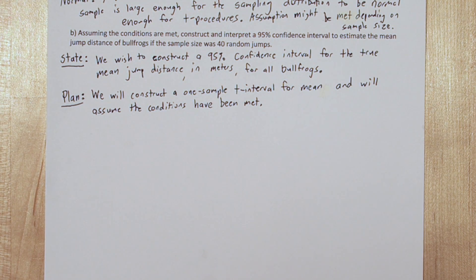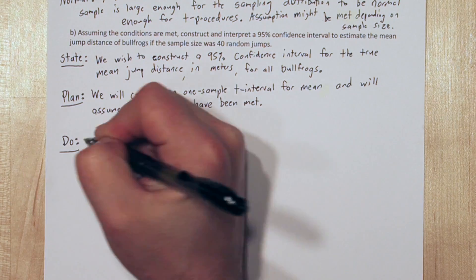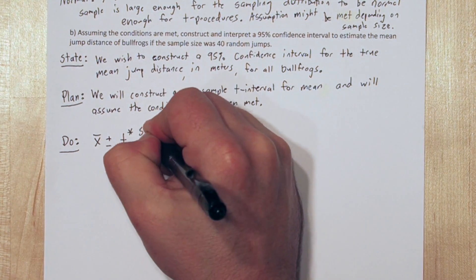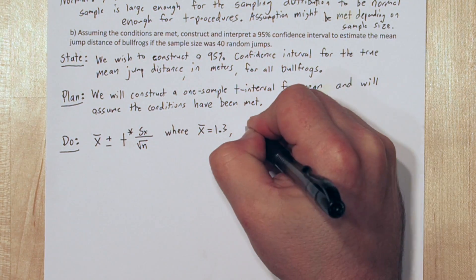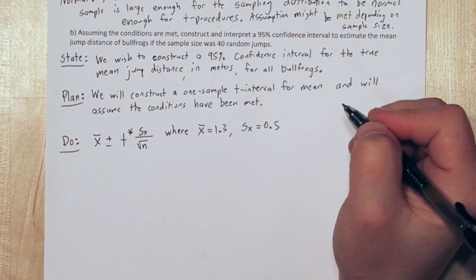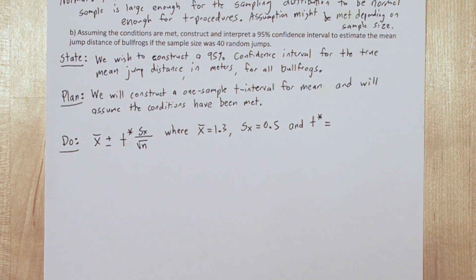For the do step, our confidence interval is going to be x bar plus or minus the margin of error, T star times s sub x over the square root of n, where x bar is 1.3 and s sub x is 0.5 from the stem of the problem.